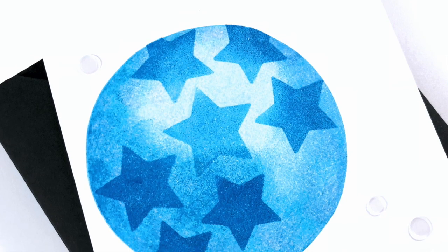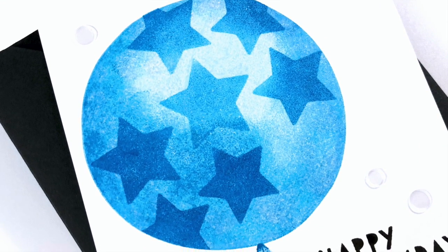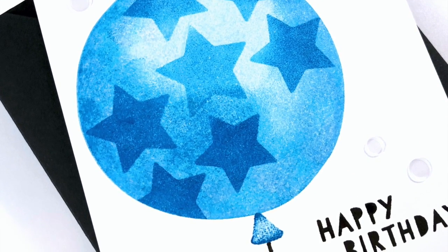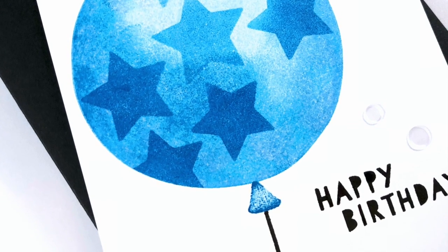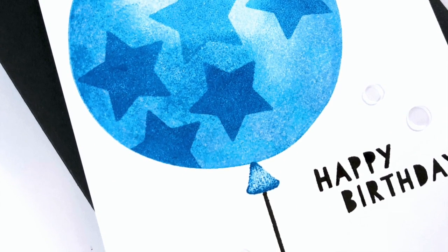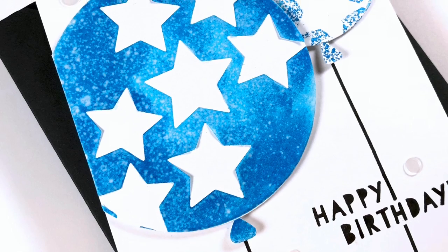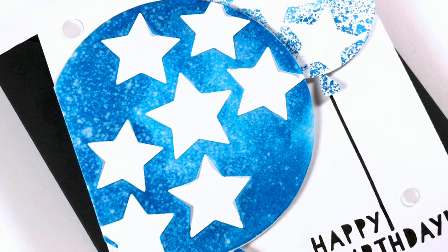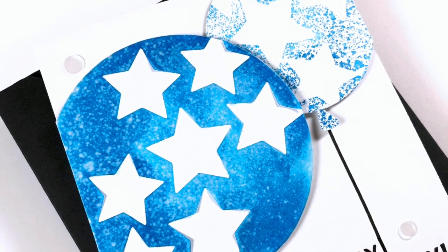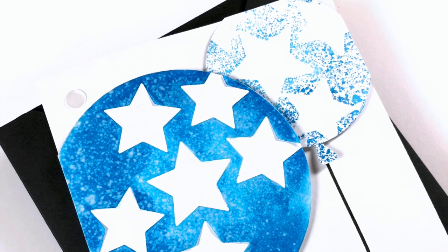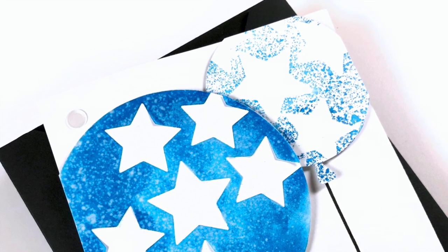Here are a couple close-ups so you can see the texture of that stamped image. You can see the sponge dauber texture in that stamping and I just love how that turned out. With the second card we have the largest balloon is the vellum on the cardstock, the smaller balloon is the technique we used by stamping the vellum onto a piece of cardstock.